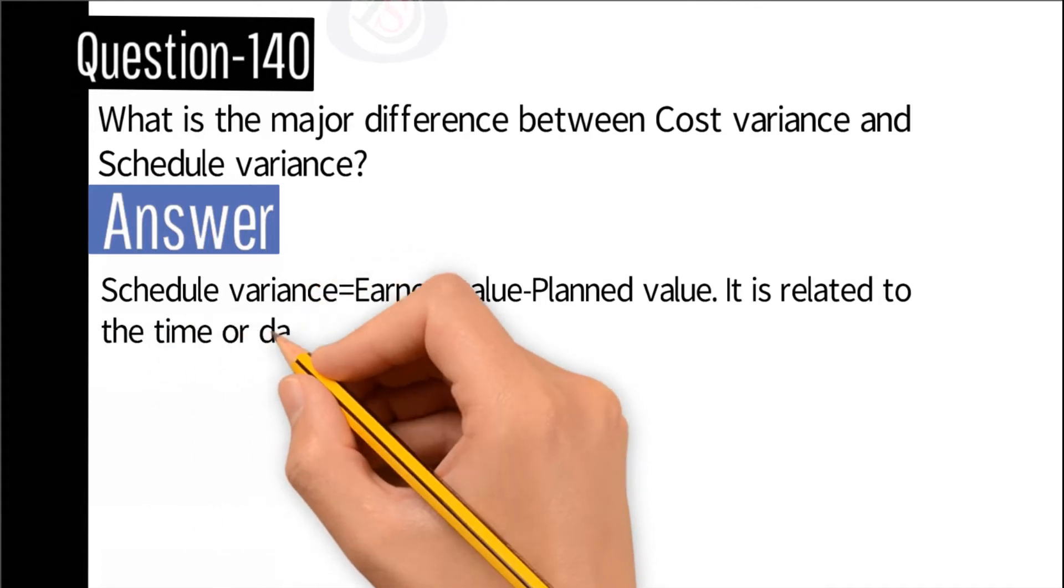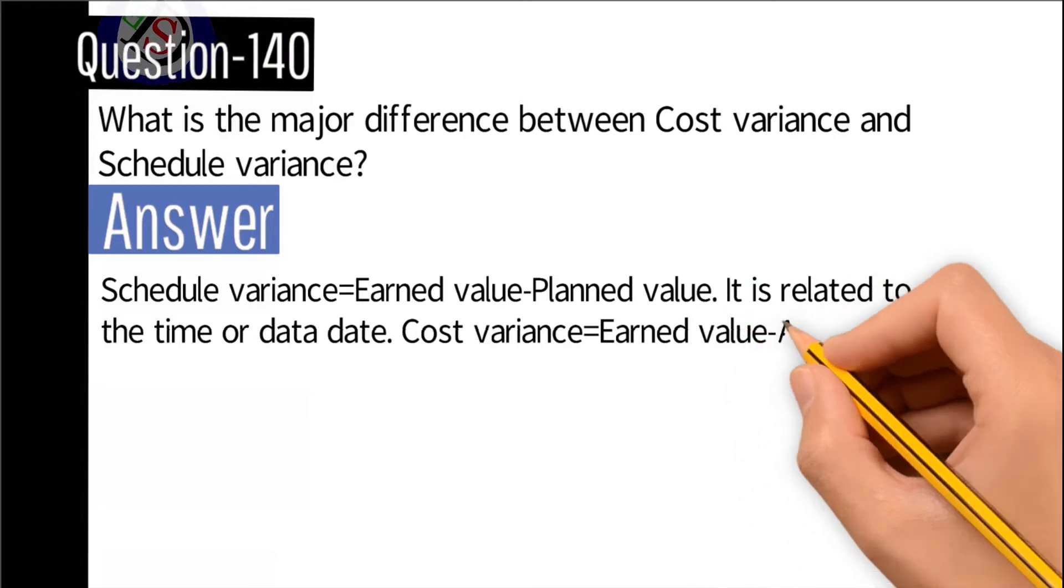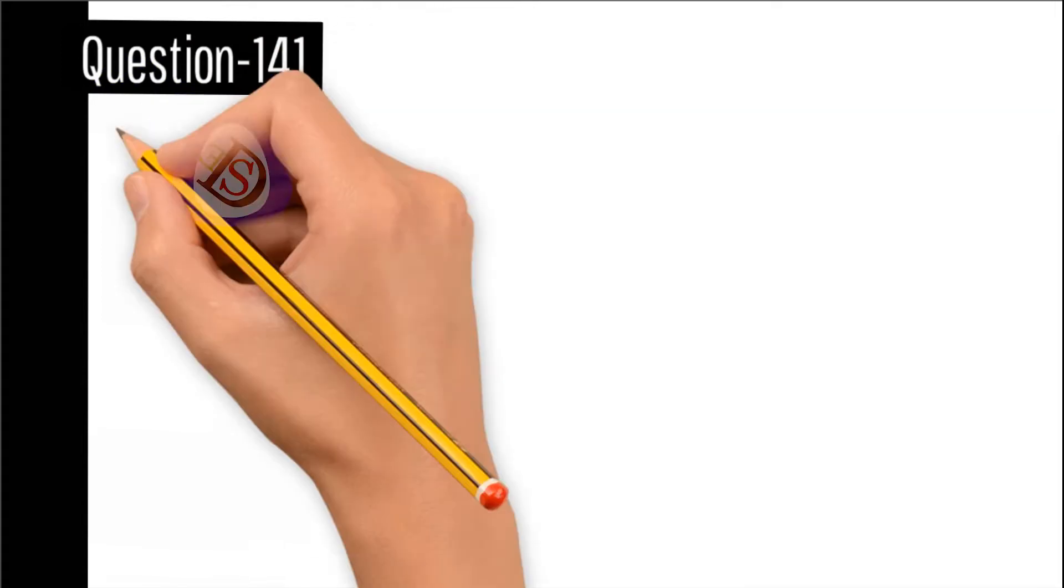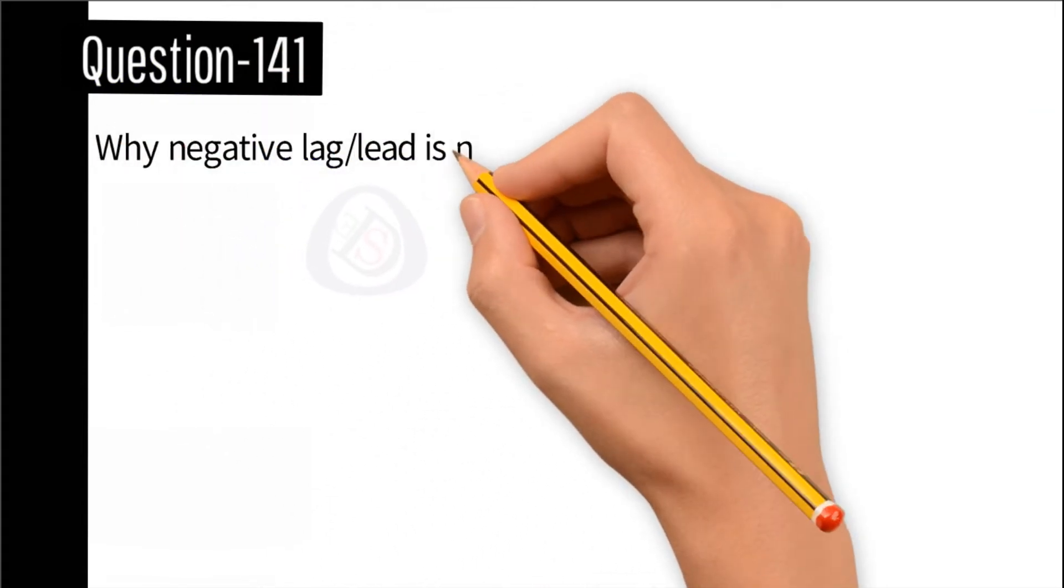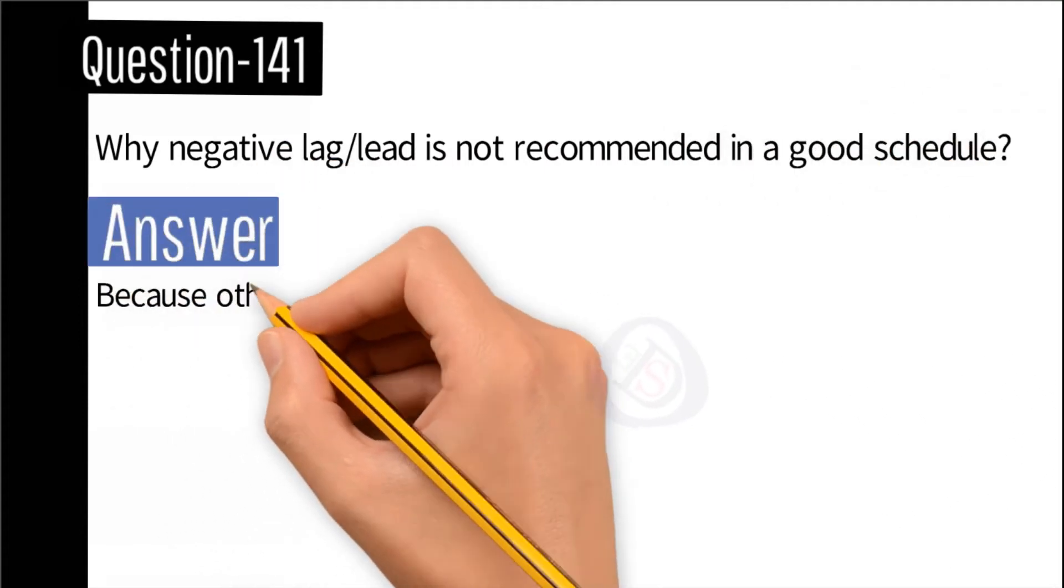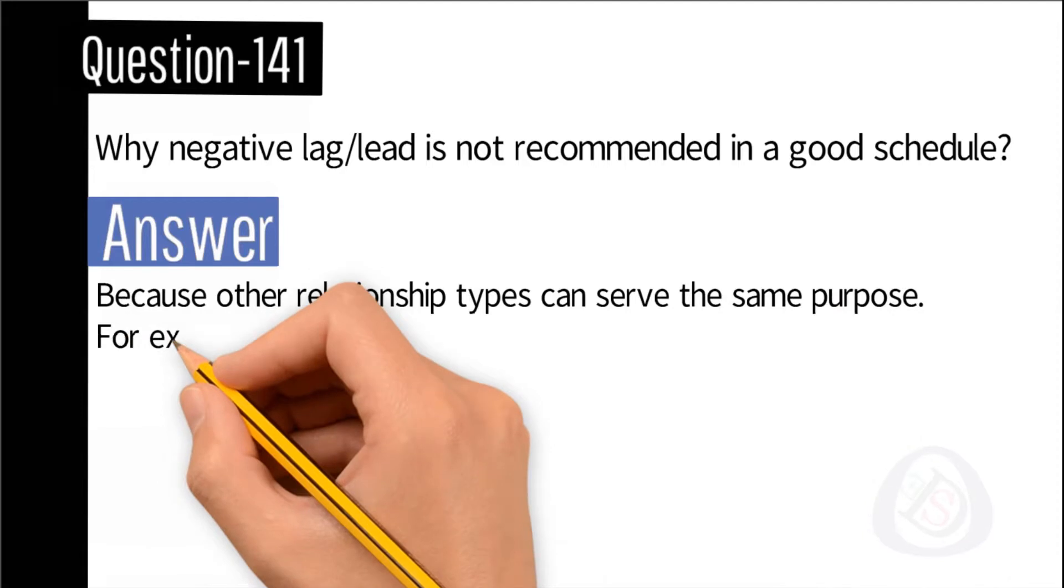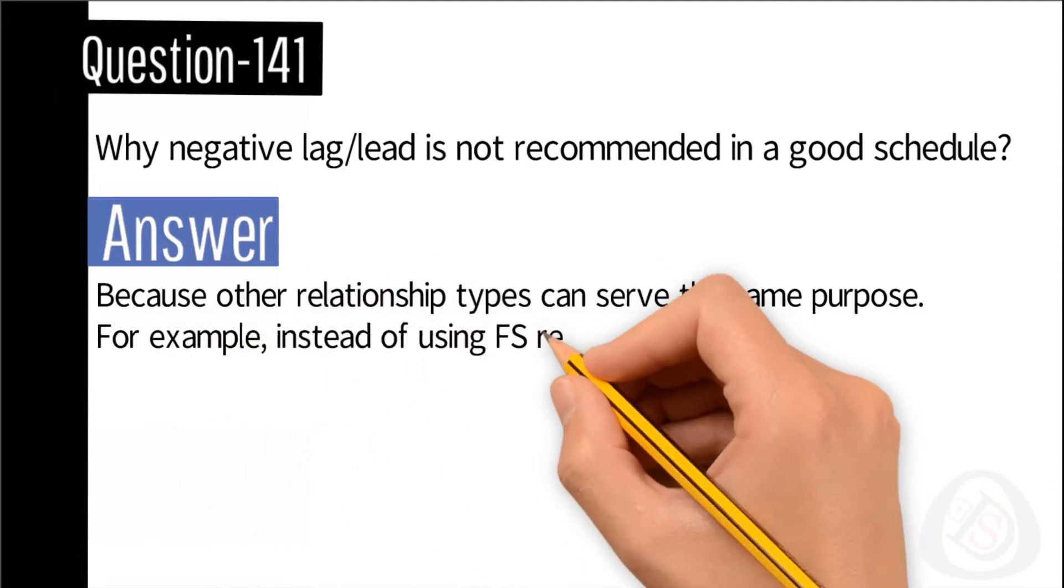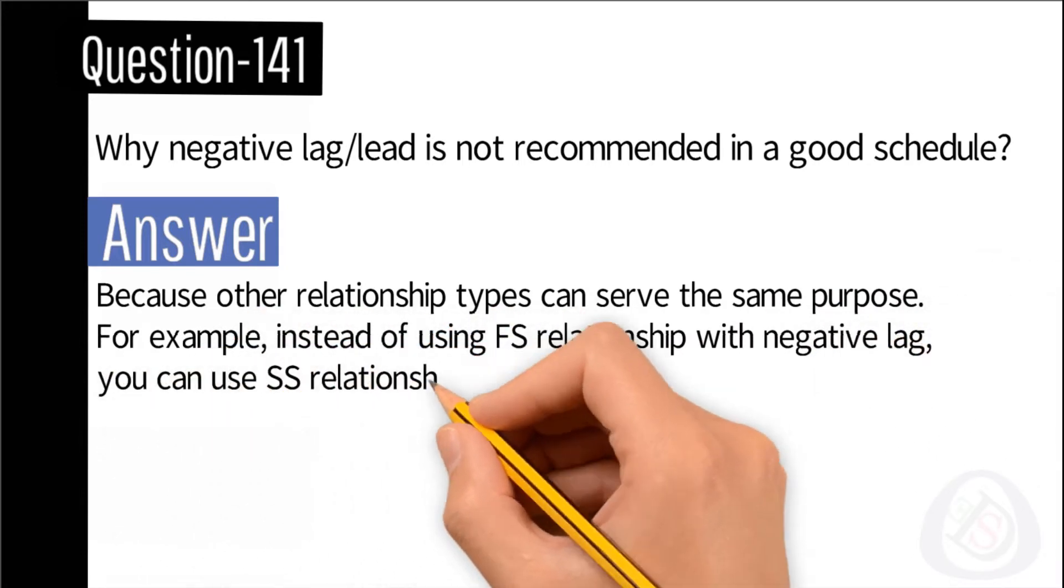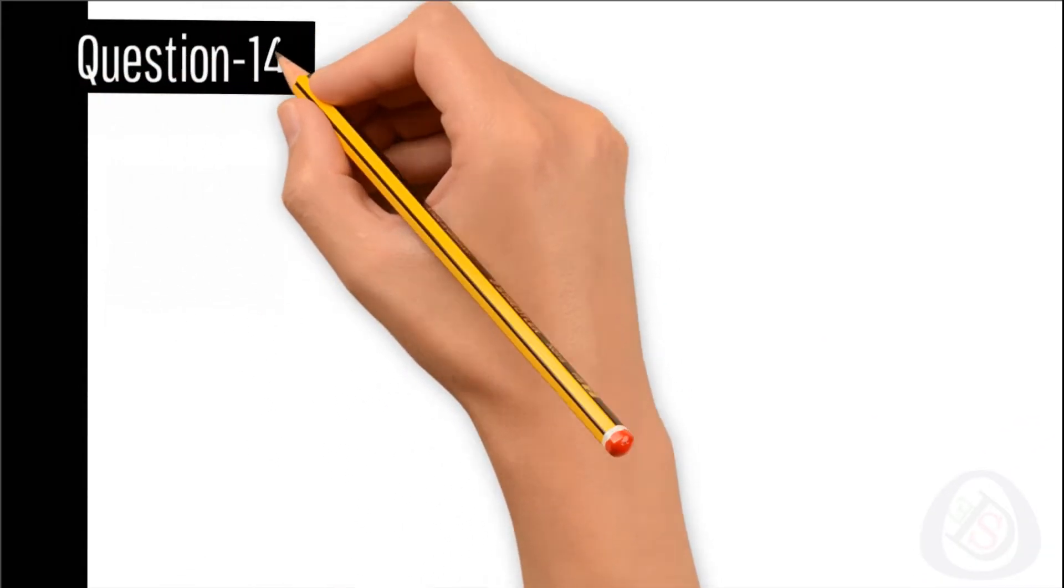Question number 141: Why is negative lag or lead not recommended in a good schedule? Answer: Because other relationship types can serve the same purpose. For example, instead of using FS relationship with negative lag, you can use SS relationship with positive lag.